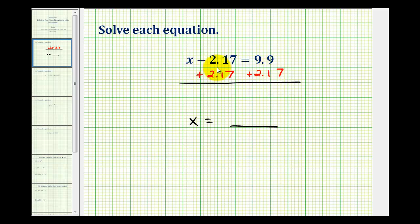So now on the left side of the equation, minus 2.17 plus 2.17 would be zero. So notice how we're left with x on the left side. And then on the right side, we have to determine this sum. So if we wanted to, we could add a zero in the hundredths place value here. So now we'll bring down the decimal point and add the corresponding place values.